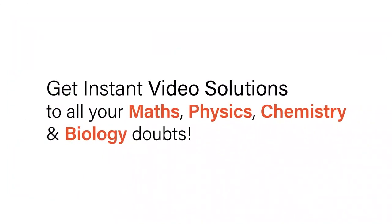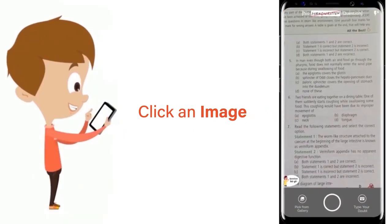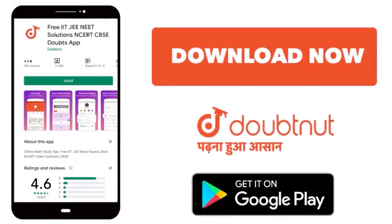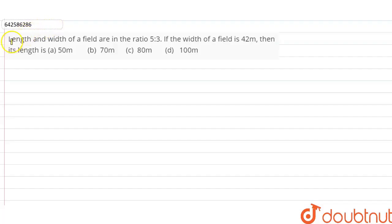With Doubtnet, get instant video solutions to all your math, physics, chemistry, and biology doubts. Just click the image of the question, crop the question, and get instant video solution. Download Doubtnet app today. Hi students, our question is: length and width of a field are in the ratio 5:3.